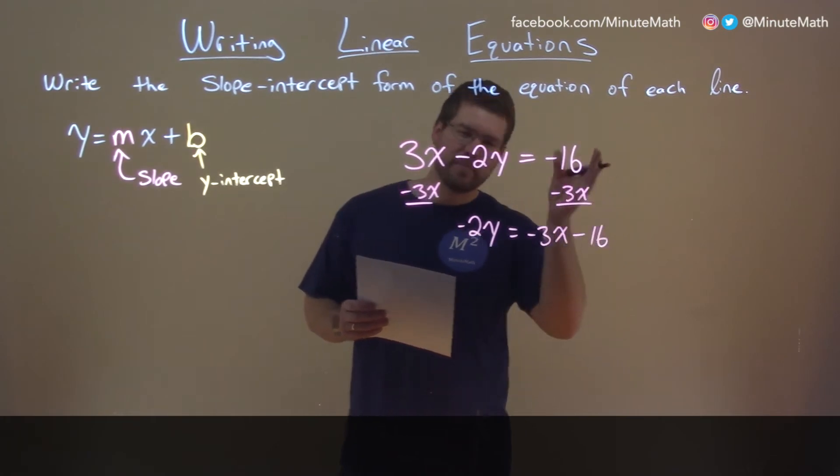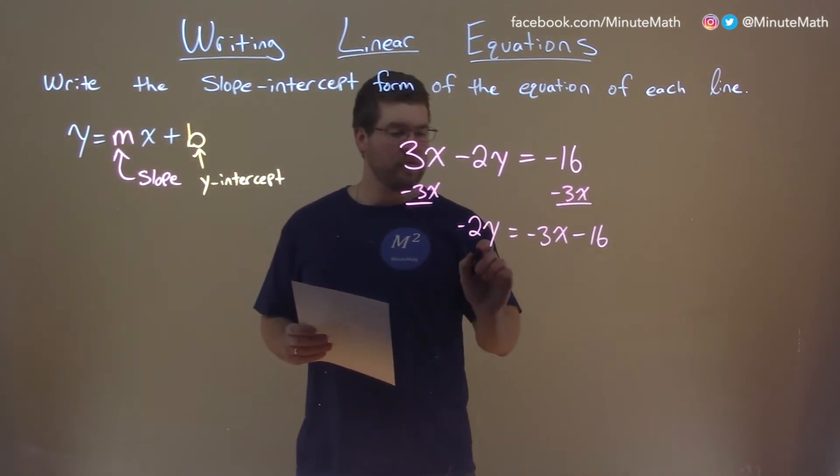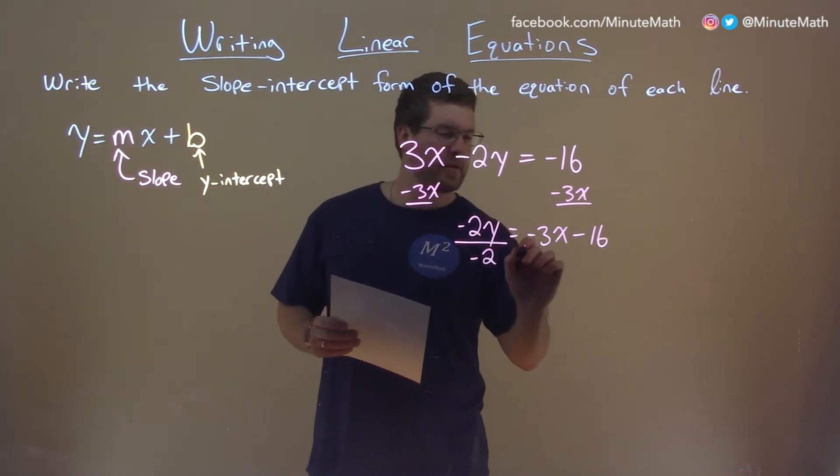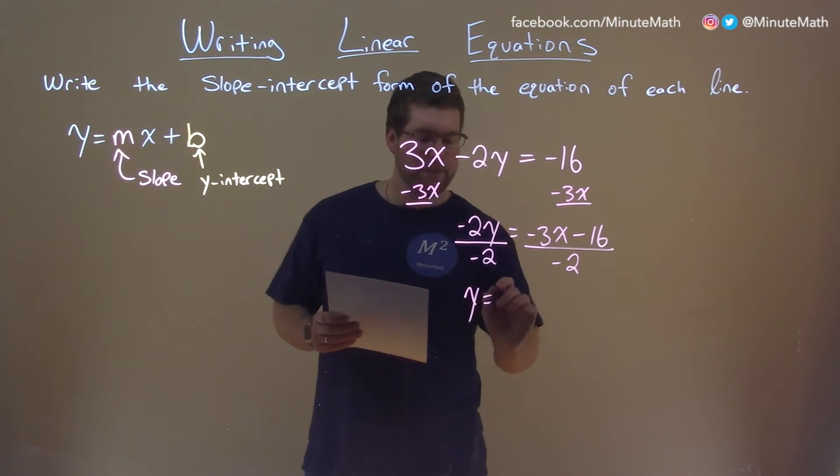They're not like terms, can't really combine them. We now have to divide by negative 2, opposite of multiplication here, to both sides, leaving me y by itself.